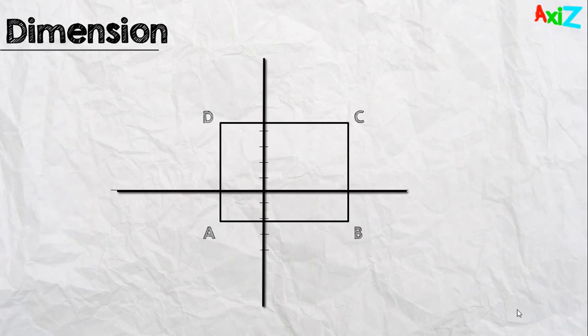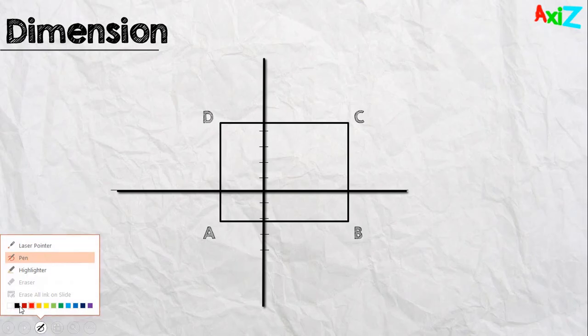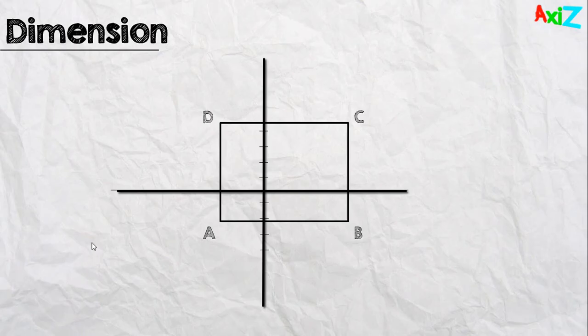Now, what we have here is a simple coordinating system as the ones we've seen at school. Let's turn on my pen and choose black color. As we know, this type of coordinating system has two axes.